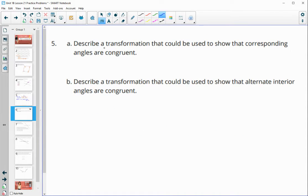Number five, describe a transformation that could be used to show that corresponding angles are congruent. So corresponding angles are through translation. So translate one angle. So translate an angle onto its corresponding angle.